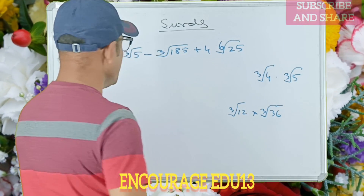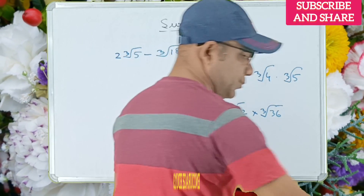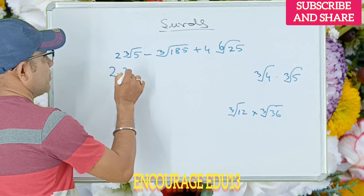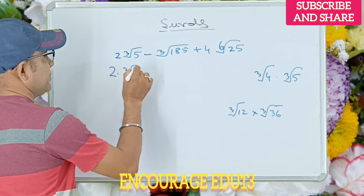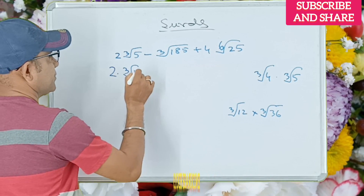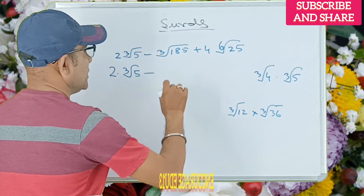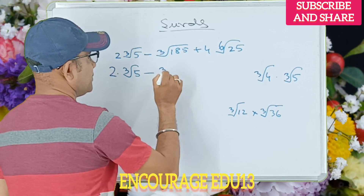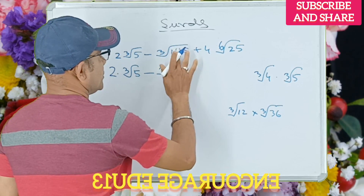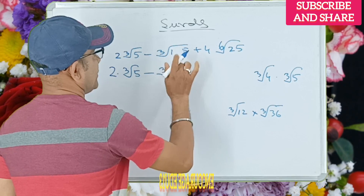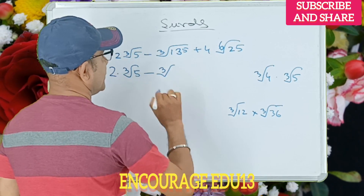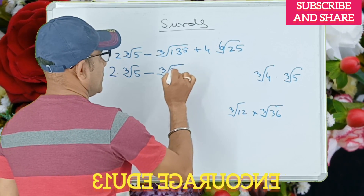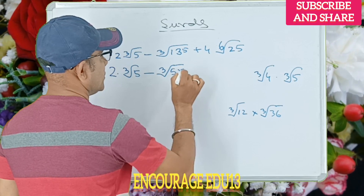Today I said 2 into cube root of 5, minus 3. Sorry, 135 — that is 135, cube root of 5 into 27.